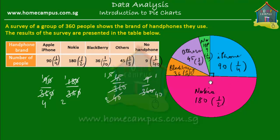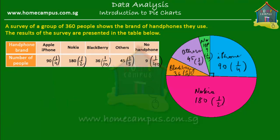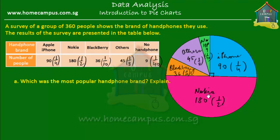Now let's answer some questions based on this pie chart. First question: which was the most popular handphone brand? Nokia was the most popular handphone brand because it has the biggest slice — quite obvious from the chart.